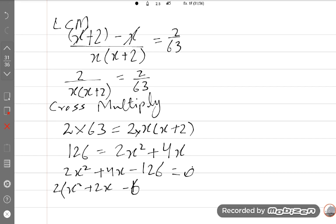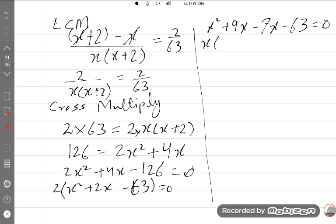Now I will use the midterm break method. X squared plus 9X minus 7X minus 63 equals 0.